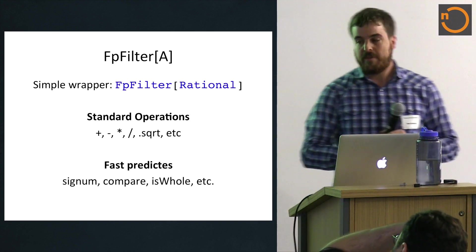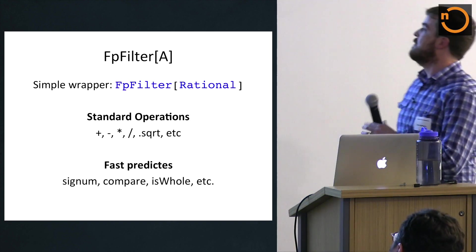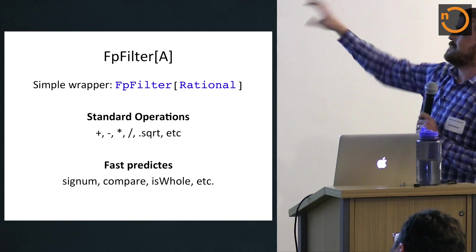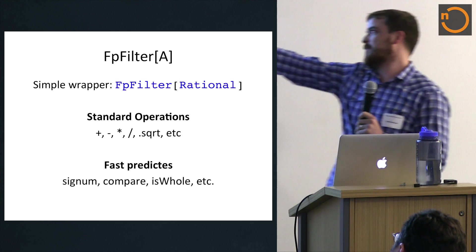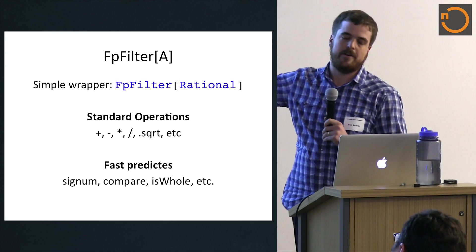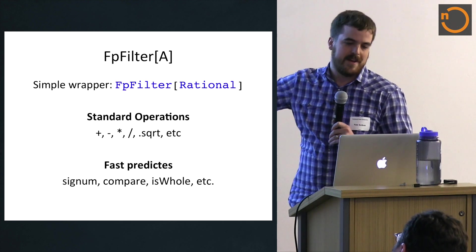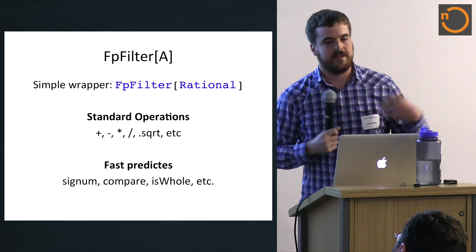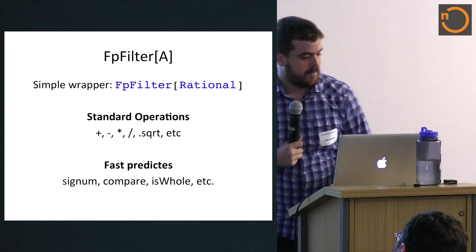And as long as you stick with that, what it promises is that it has these predicates. The two main ones are signum and compare. And what it says is that it'll try to use the floating point approximation for those, and if it can, it'll be fast.